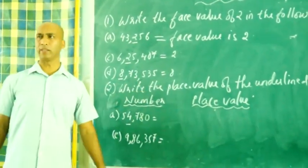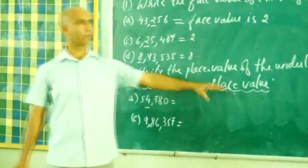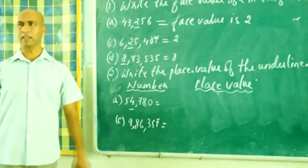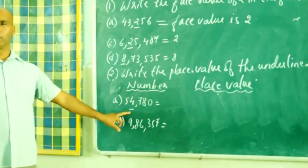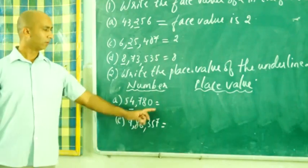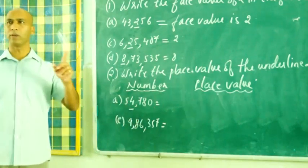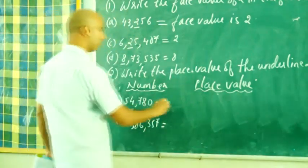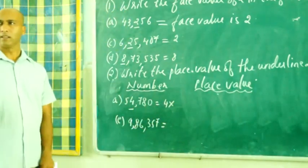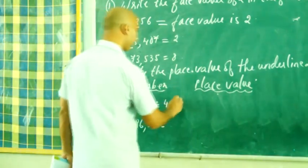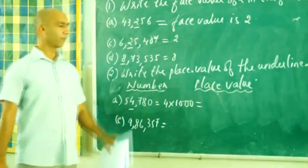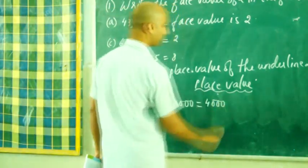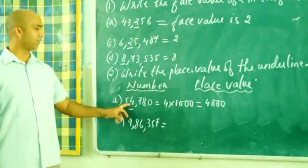The number is 54,780. This digit is underlying, 4. So you can see in what place is 4. 1 is 10, 100, 1000. 4 is in 1000 place. So what will we do? The number is 4, so 4 we will multiply it by the place. In what place is 4? 1000 place. So you will multiply it by 1000. So 4 multiplied by 1000 would be equal to 4000.